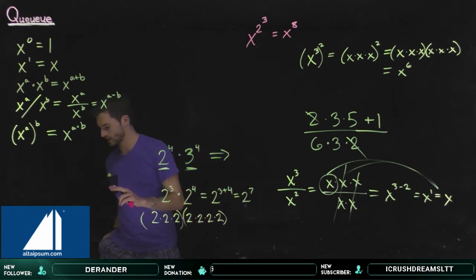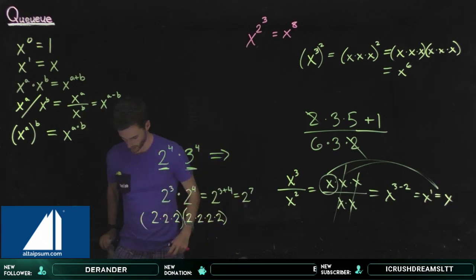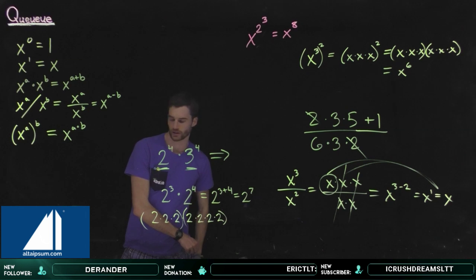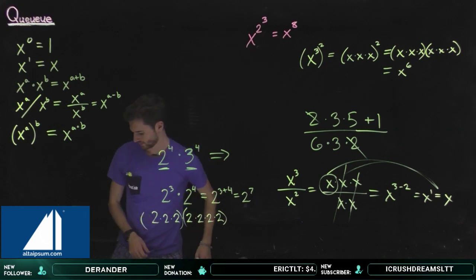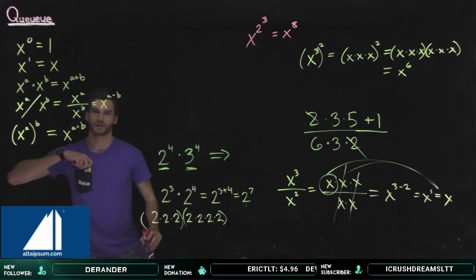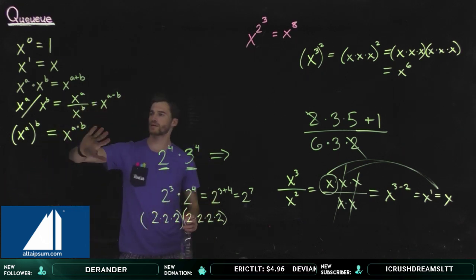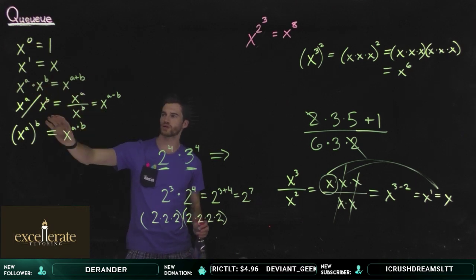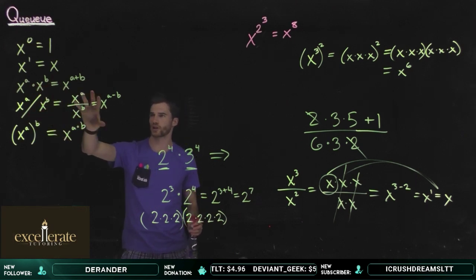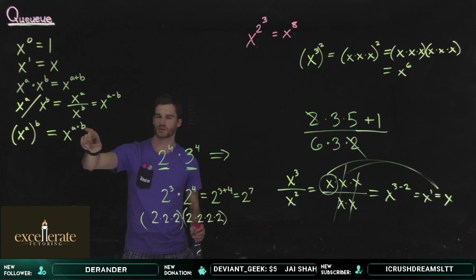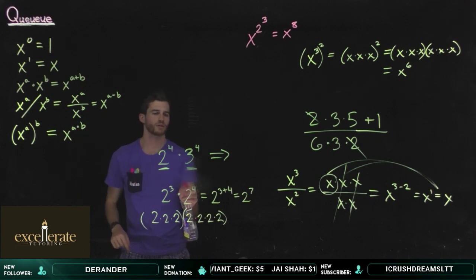To summarize the pattern: multiplication becomes addition with the product rule, division becomes subtraction with the quotient rule, and raising to a power becomes multiplication with the power rule.